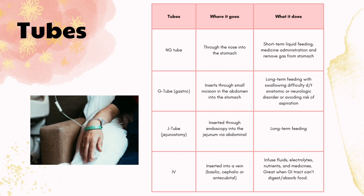First off we have the NG tube which goes through the nose and it's more for short-term liquid feeding. It also does medicine administration and removing gases from the stomach. Next we have G tubes which are inserted through the abdomen into the stomach, and this is for more long-term feeding for people who have difficulty with swallowing.